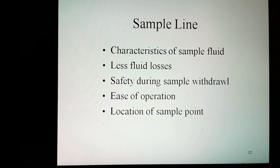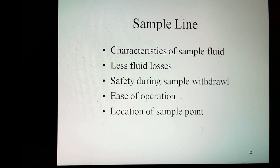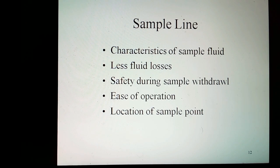Sample line: normally a small fluid quantity is collected for analysis to determine its composition. It is applicable for any stage of processing — raw material, intermediate product, finished product, or even utility or effluent. Even for small quantities, line size may depend upon the type of fluid being handled and the location of the sample point in the process. For clear liquids, the sample line size depends upon its location — atmospheric tank, pump suction or discharge, etc. The following points should be kept in mind while sizing: the same characteristics of sample fluid, less fluid losses, safety during sample withdrawal, ease of operation, and location of sample point.